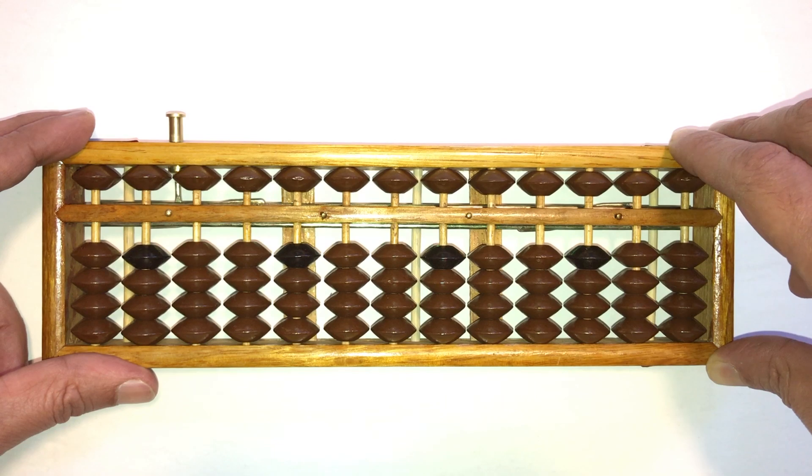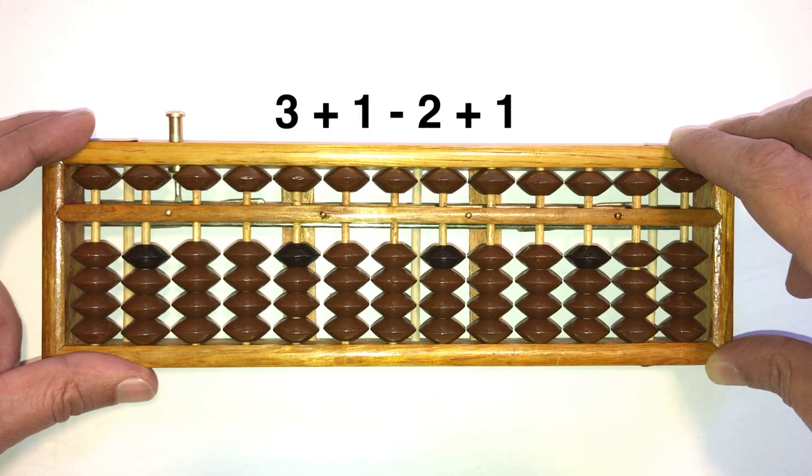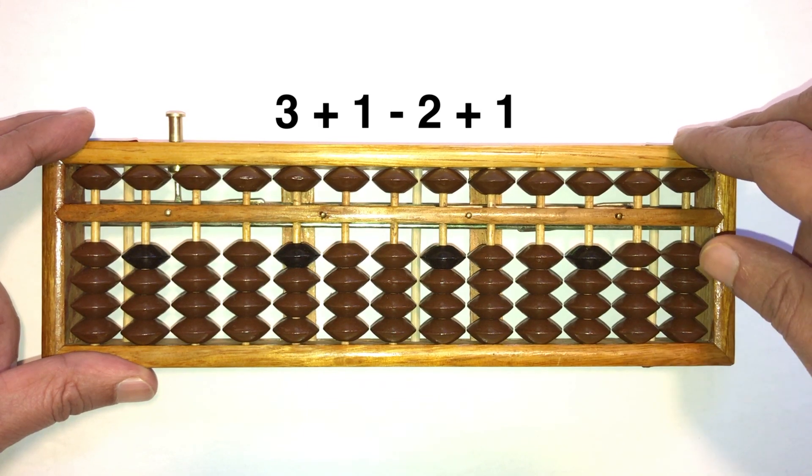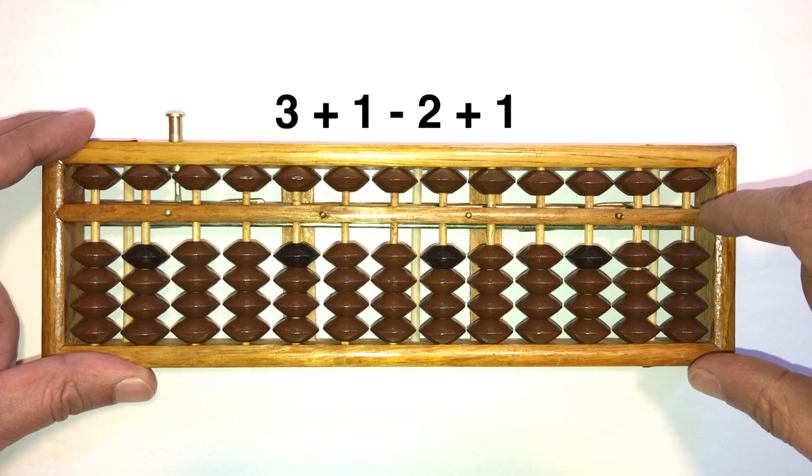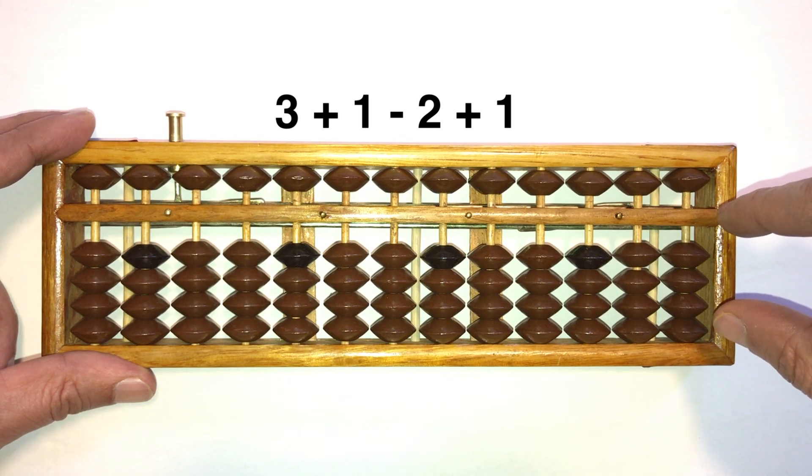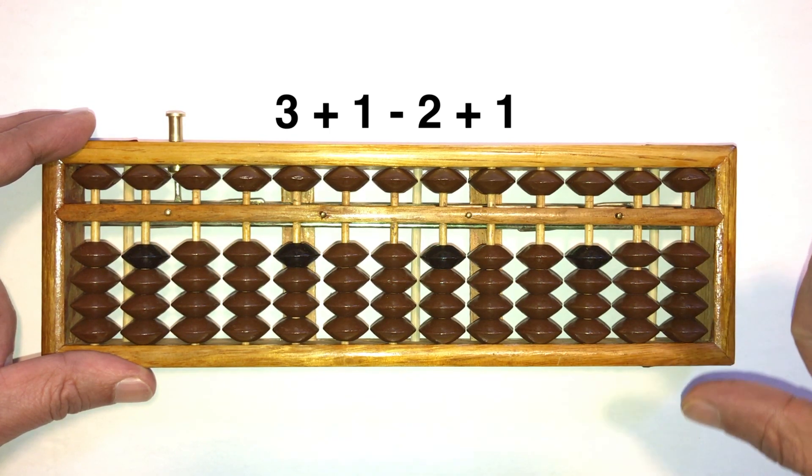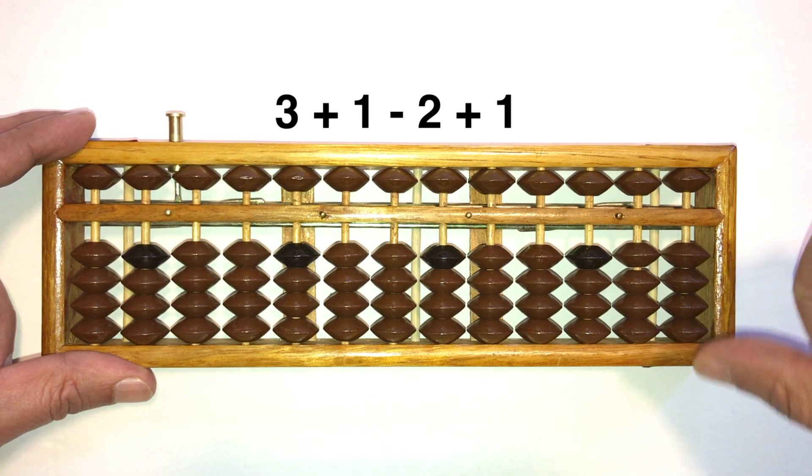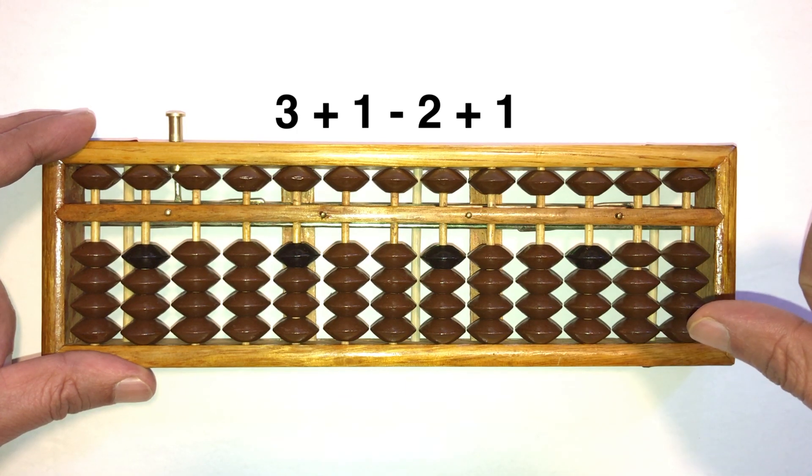Well, with that in mind, let's dive in. Let's solve 3 plus 1 minus 2 plus 1. 3 plus 1, what do you see touching the answer bar? I see a 4. Take away 2, add 1. What's left touching the answer bar? Now it's a 3.